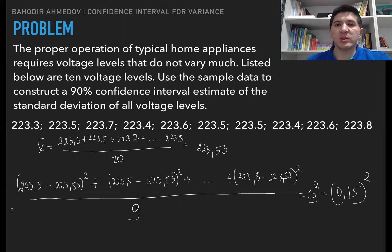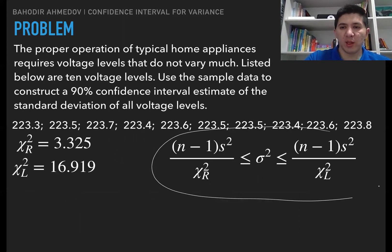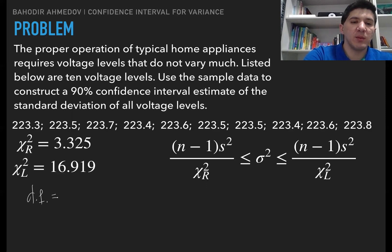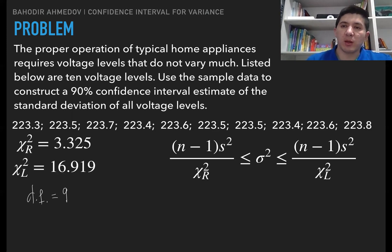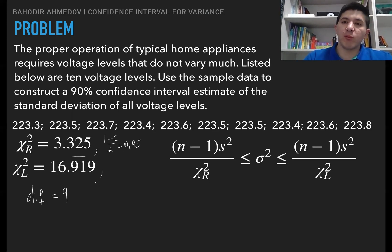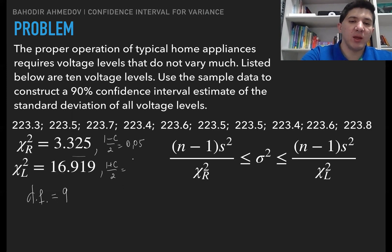Now use these numbers to construct the confidence interval. We need to find the two critical points. The degrees of freedom equals 9 (sample size 10 minus 1). To find the right critical point, use 1 minus C over 2; in this case 1 minus 0.9 over 2 equals 0.05. To find the left critical point, use (1 plus C) over 2, which is 0.95.